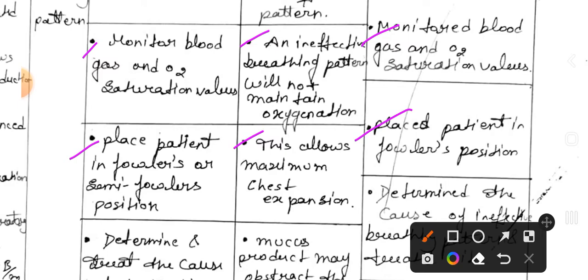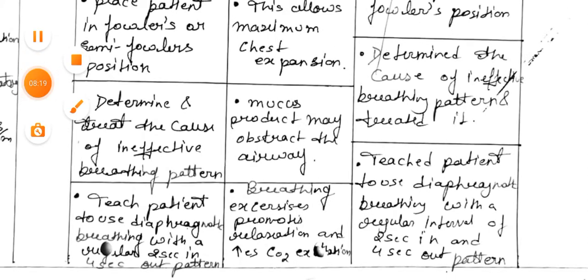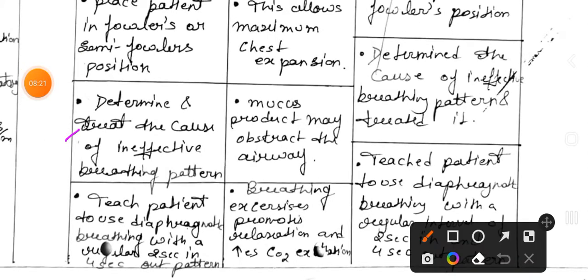Implementation: place patient in Fowler's position. Fourth intervention: determine and treat the cause of ineffective breathing pattern. Rational: mucus production may obstruct the airway. Implementation: determine the cause of ineffective pattern and treat it. Fifth intervention: teach patient to use diaphragmatic breathing with a 2-second in and 4-second out pattern.